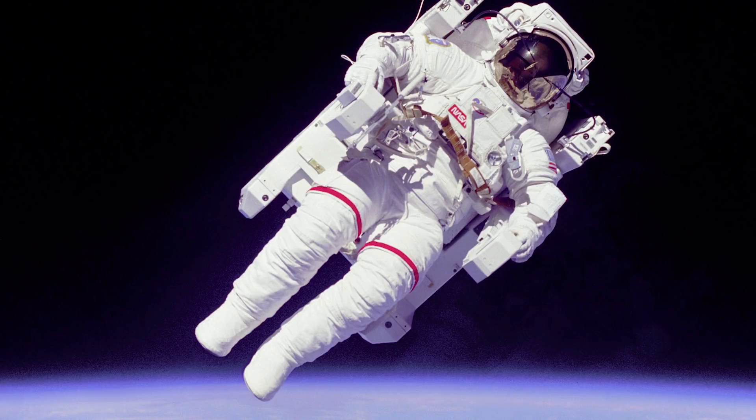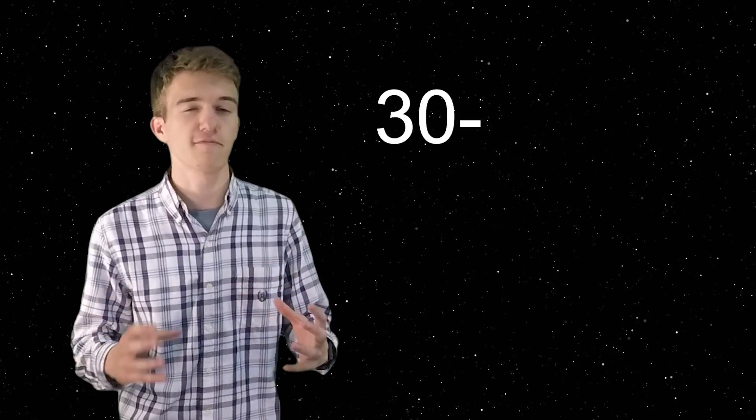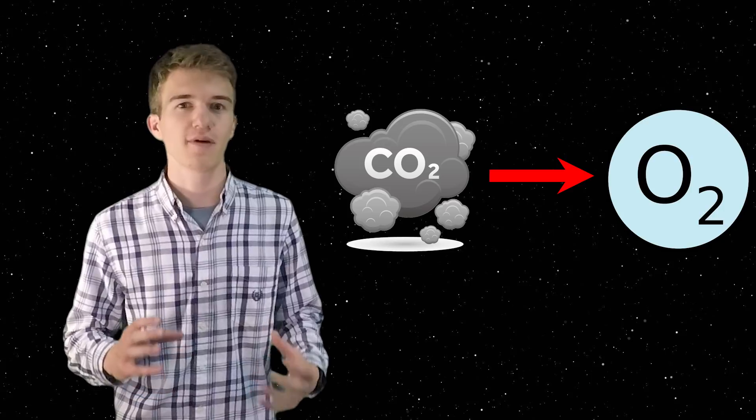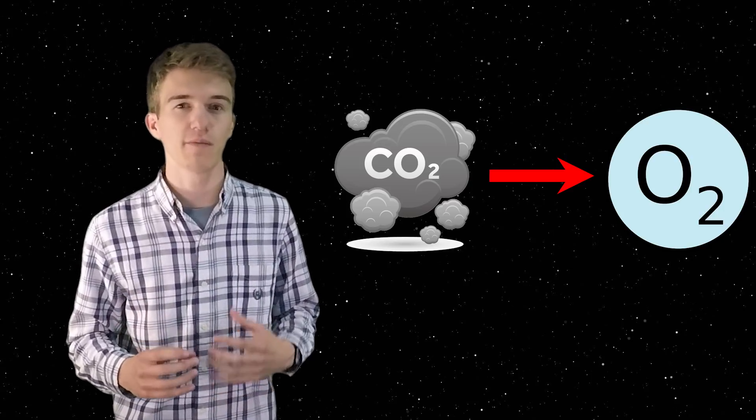When we talk about terraforming Mars, it's a really common thing to discuss how we need to raise the temperature of the surface. And in doing so, we would actually have to increase the atmosphere to around 30 to 50 kilopascals. Once we got to this region where this pressure is much larger, that's a time when we would actually want to start converting the CO2 atmosphere to oxygen, because that is a region that we would actually be able to breathe and plants would be able to photosynthesize.